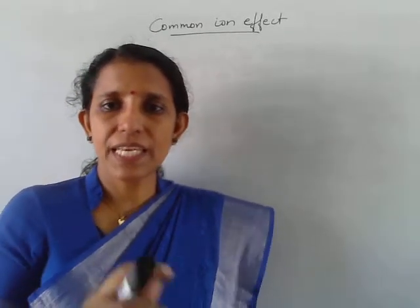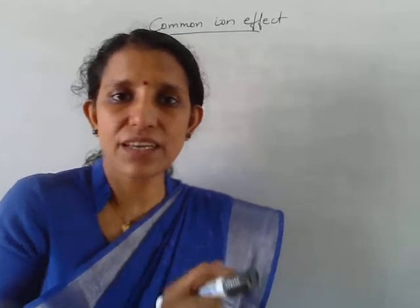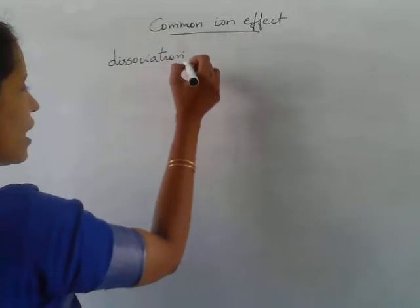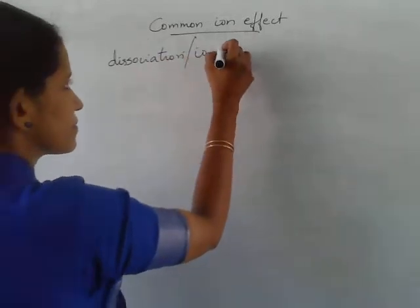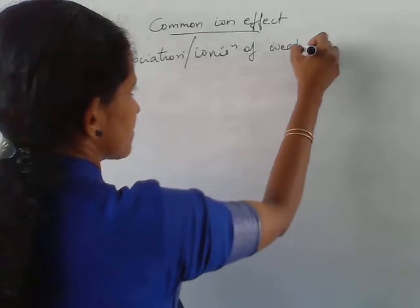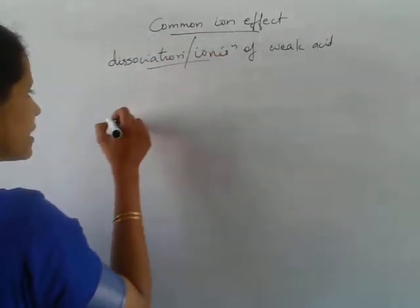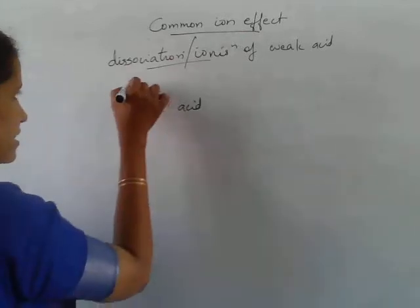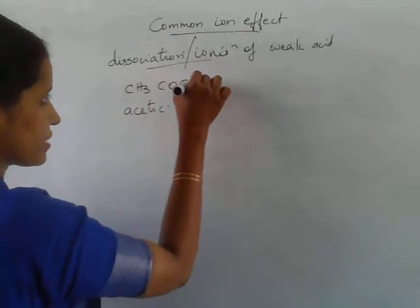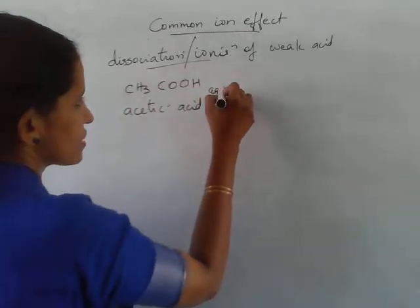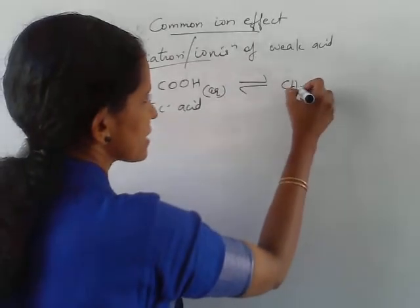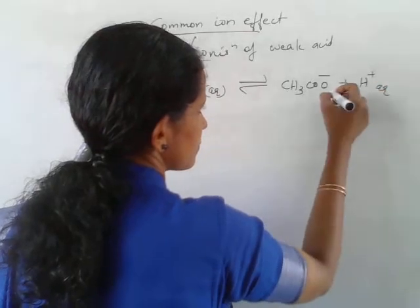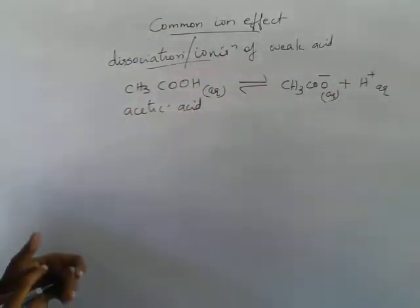Dear students, consider the equilibrium for the dissociation or ionization of a weak acid. We take acetic acid here. The formula is CH3COOH. Acetic acid dissociates to give acetate — CH3COO minus — plus H plus ion.